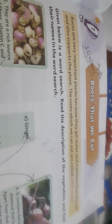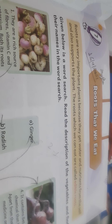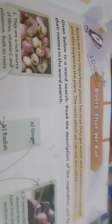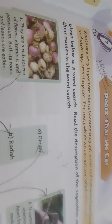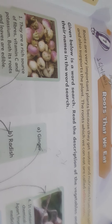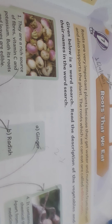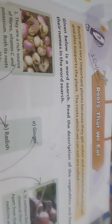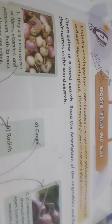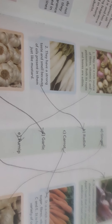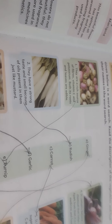The roots which we can eat are called edible roots. Now there are some examples of edible roots: they are ginger, radish, carrot, garlic, turnip, and beetroot.